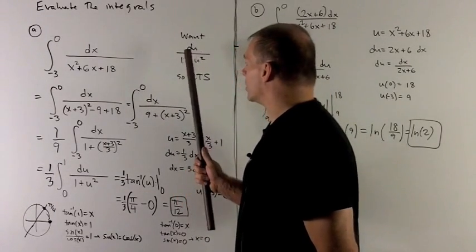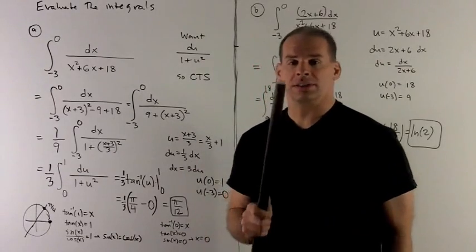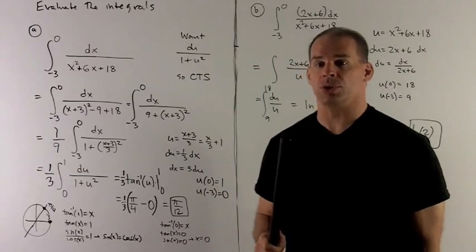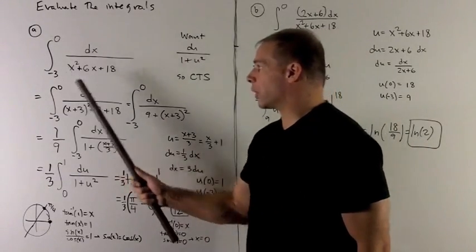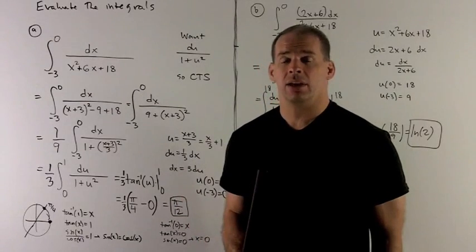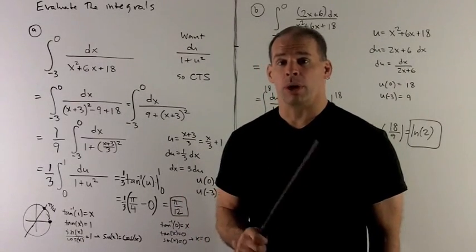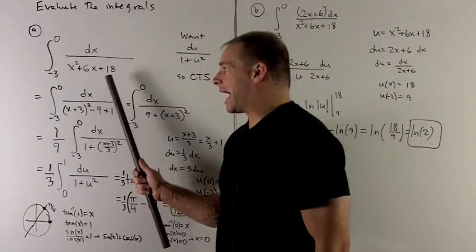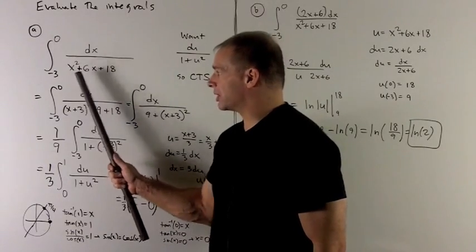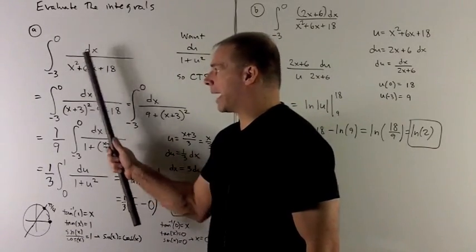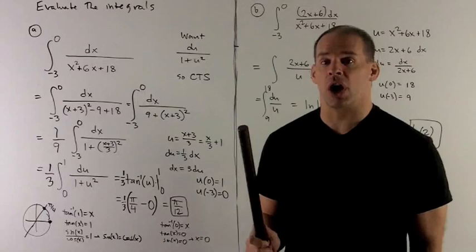So what we're gunning for is something of the form of either du over square root of 1 minus u squared. There's no square root here, so that's probably not it. Or du over 1 plus u squared. This doesn't look like that, but at least it's something plus x to a power. So we'll try to target that.